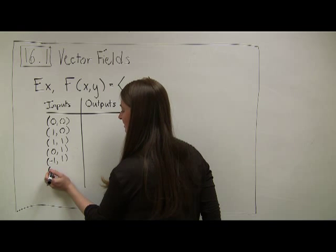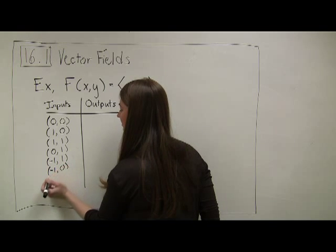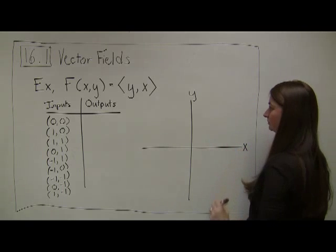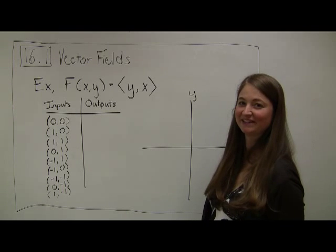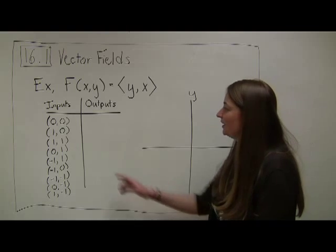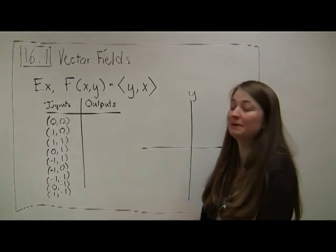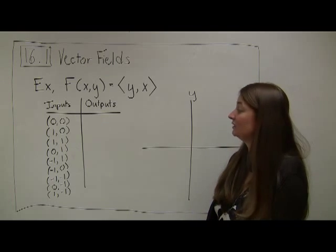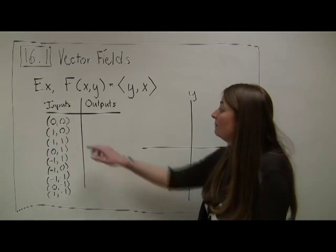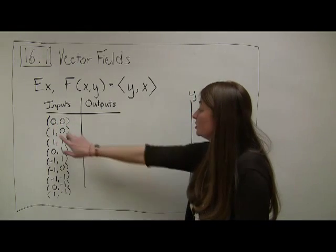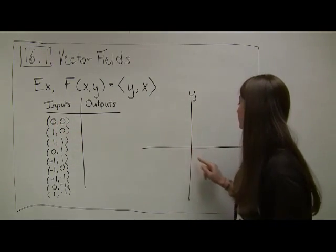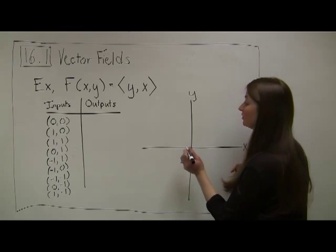I'm going to pick points that I think are useful points for generating a picture of what's going on. So I've picked a collection of points that could be input points, and really, we could pick any points that we wanted to plot. We just need to be able to get an idea of what this vector field looks like. My inputs are points in R2. In this case, I'm putting the point into the function.